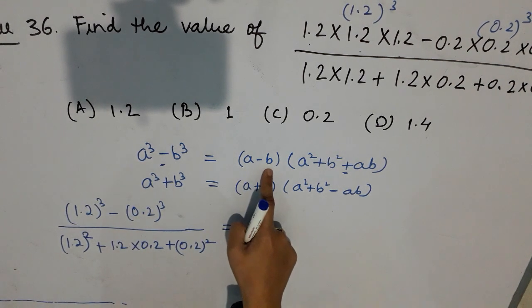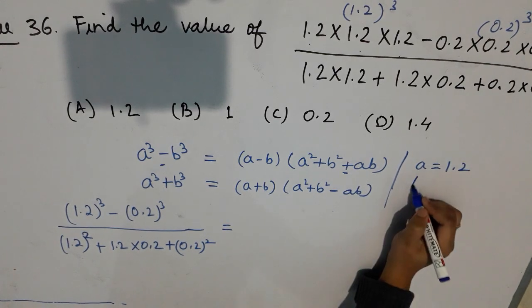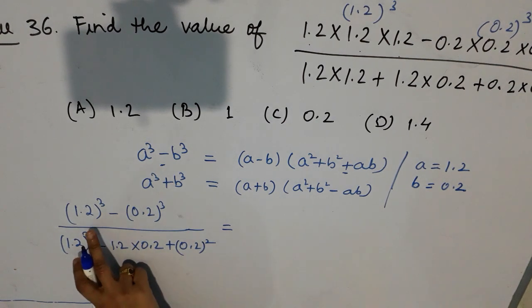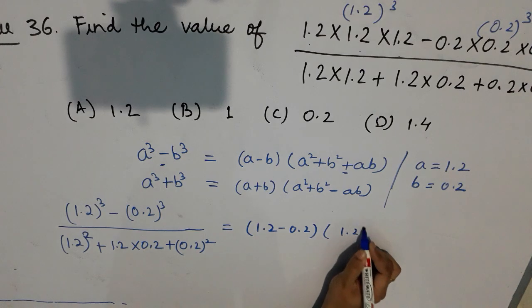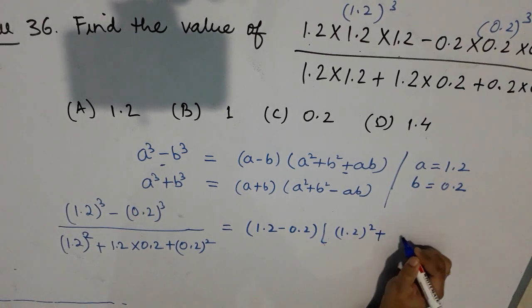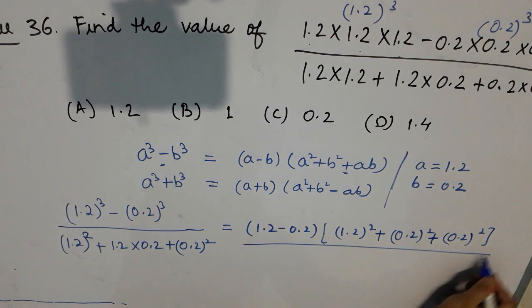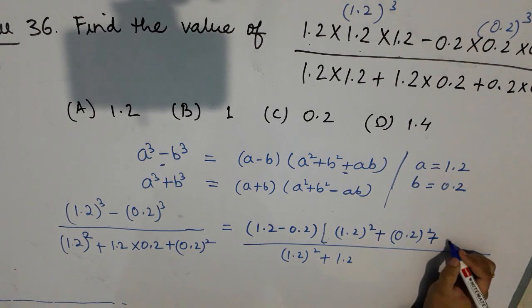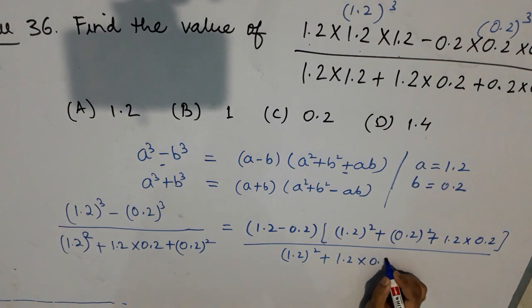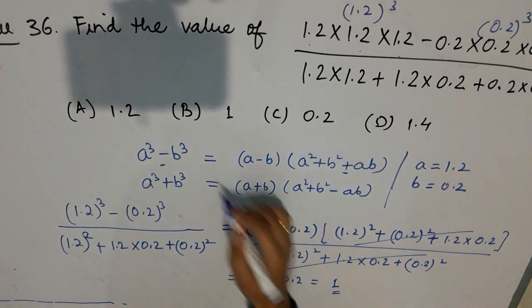We have (1.2³ − 0.2³) divided by (1.2² + 1.2×0.2 + 0.2²). Here A = 1.2 and B = 0.2. Applying A³ − B³ = (A − B)(A² + AB + B²), the denominator equals the second bracket. So the denominator cancels with the numerator's second factor, leaving 1.2 − 0.2 = 1. The answer is 1, again option number B.